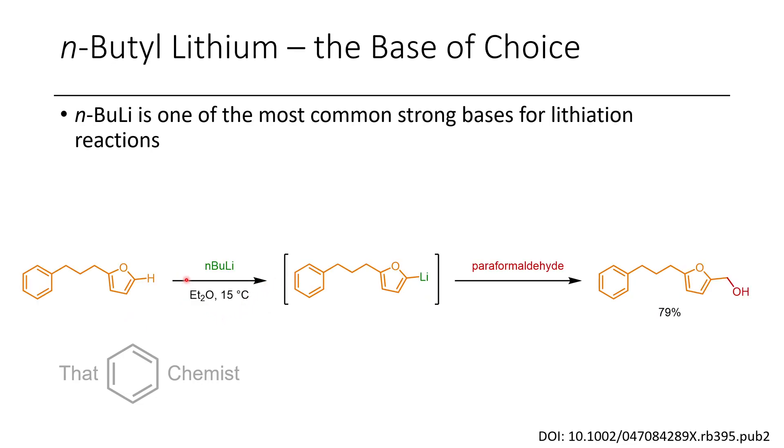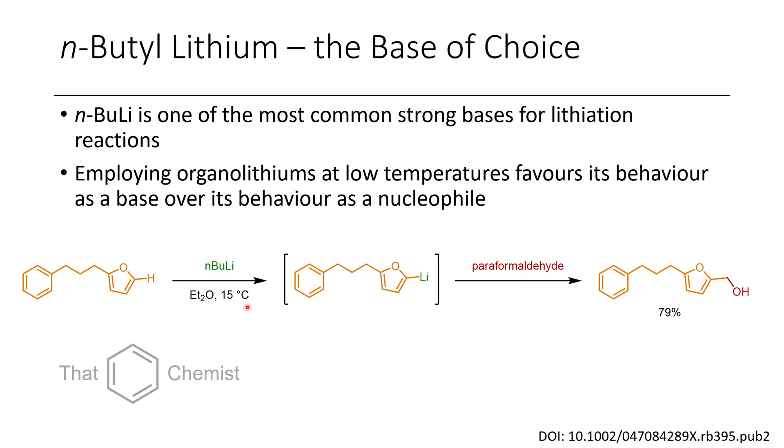The go-to base that we typically use is N-butyllithium. Here we have a furan-containing substrate which undergoes lithiation at the two position. This can then be trapped with an electrophile. In this case, they trapped it with paraformaldehyde. Paraformaldehyde is just a polymer of formaldehyde. It can attack at the carbon and displace part of the polymer as a leaving group. The reason this is used is formaldehyde on its own isn't very stable. It tends to polymerize, hence paraformaldehyde. When we do low-temperature deprotonations, we tend to favor reactivity as a base. When we start seeing higher temperature reactions, we start seeing more reactivity as a nucleophile.